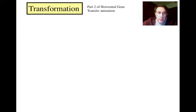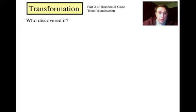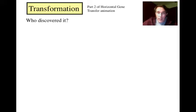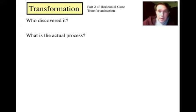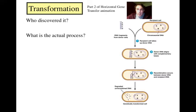Now that you've watched the piece on transformation, let's review the important salient points. Who discovered it? Transformation was first discovered in 1928 by Frederick Griffith, working with strains of pneumonia used in the animation. That transfer of genetic material — the transformation factor — was identified even before we knew about DNA. What that factor was is now known, obviously, to be nucleic acids. This diagram here illustrates the fundamental steps involved in a transformation event.